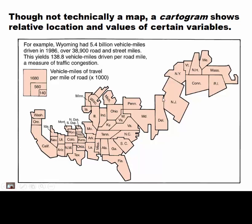A cartogram doesn't have scale — this distance is different than that distance — but it shows relative location and is used to map some type of phenomena.